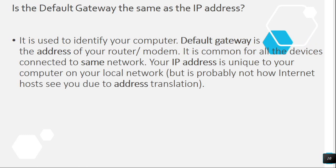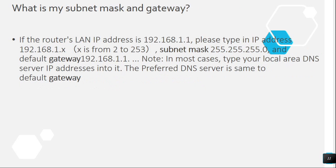Question 9: Is the default gateway the same as the IP address? The IP address is used to identify your computer. The default gateway is the address of your router or modem — it is common for all devices connected to the same network. Your IP address is unique to your computer on your local network but is probably not how internet hosts see you, due to address translation.